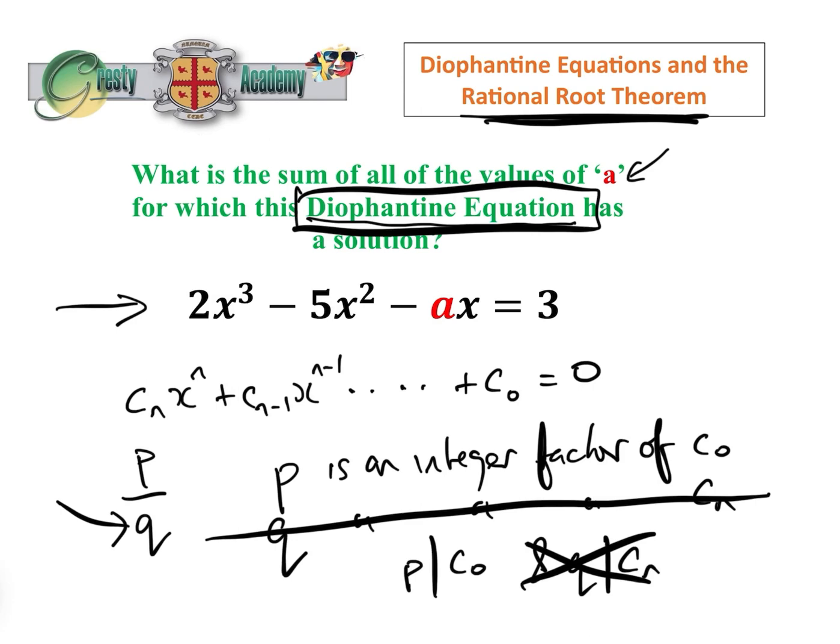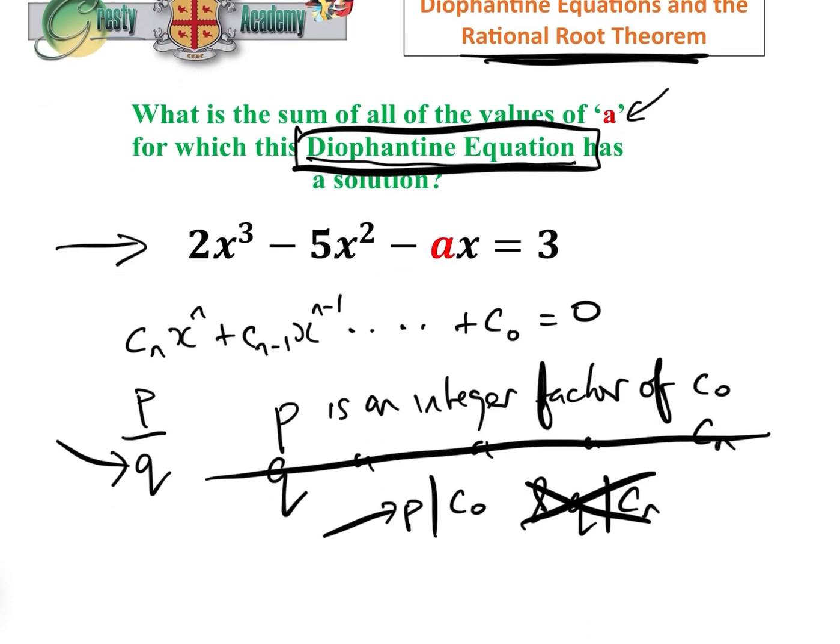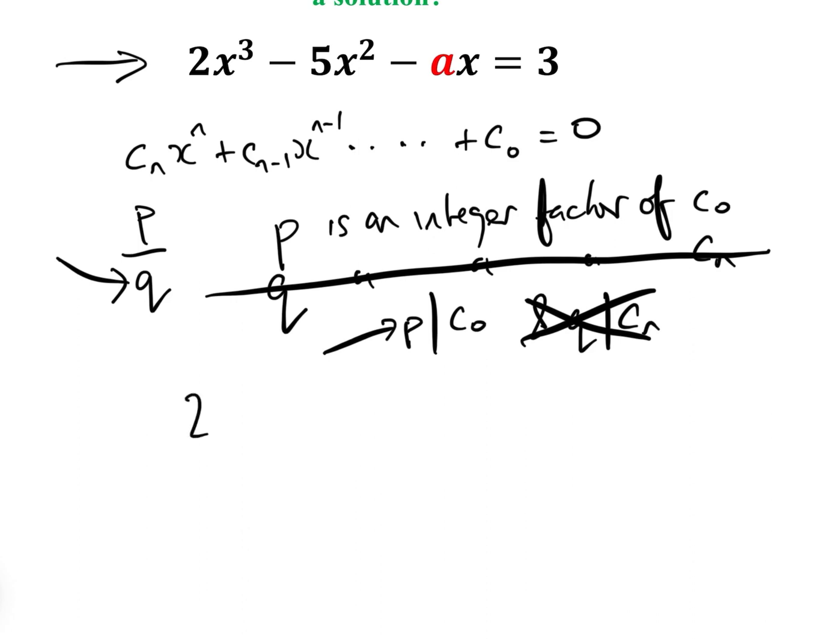So let's just rewrite our question, 2x cubed minus 5x squared minus ax, as minus 3 equals 0. And then we have here our c0 in our polynomial is minus 3. And so therefore, by the Rational Root Theorem, we know that x can only be minus 3, minus 1, 1 or 3, which are the four factors of minus 3.